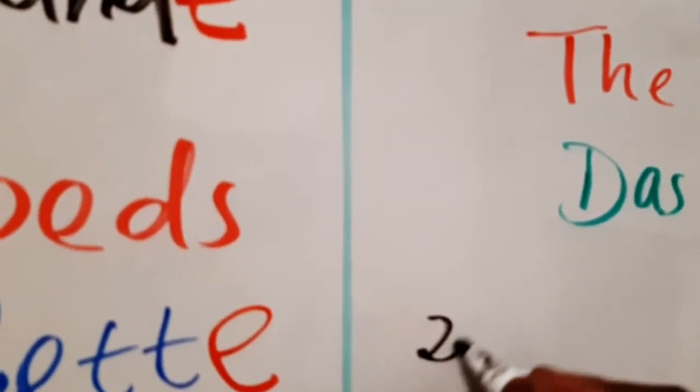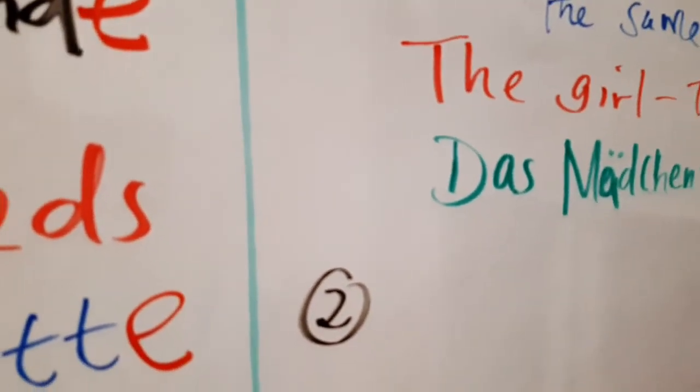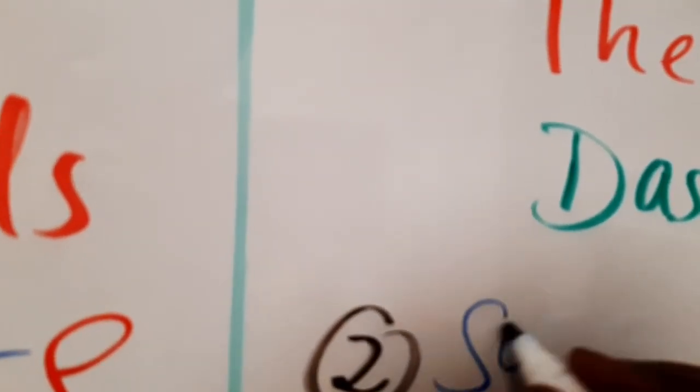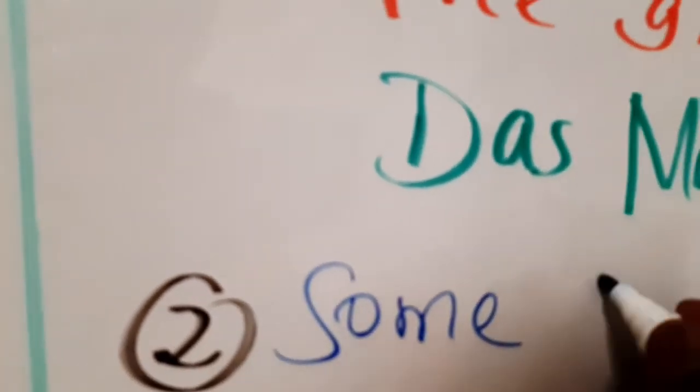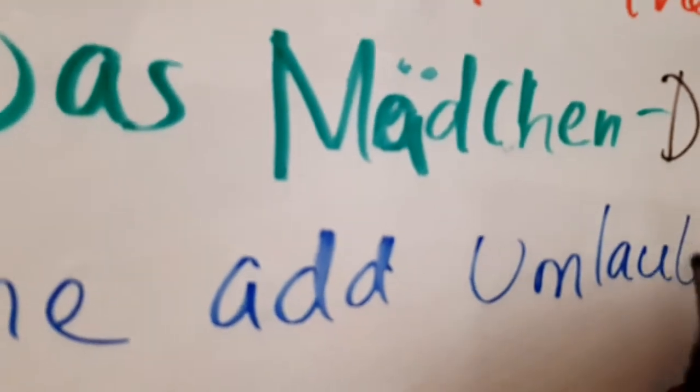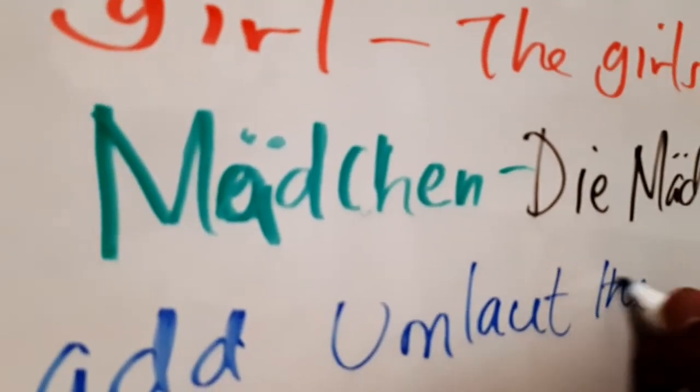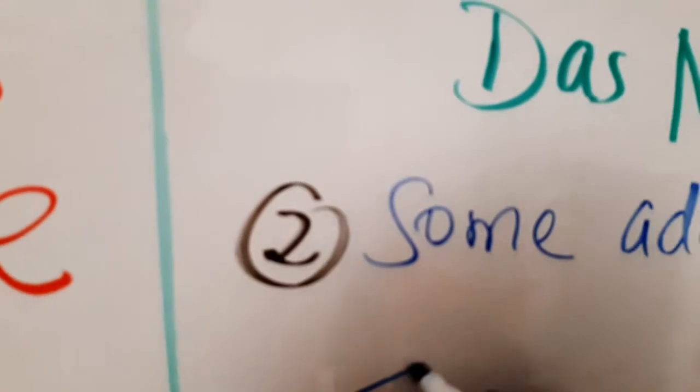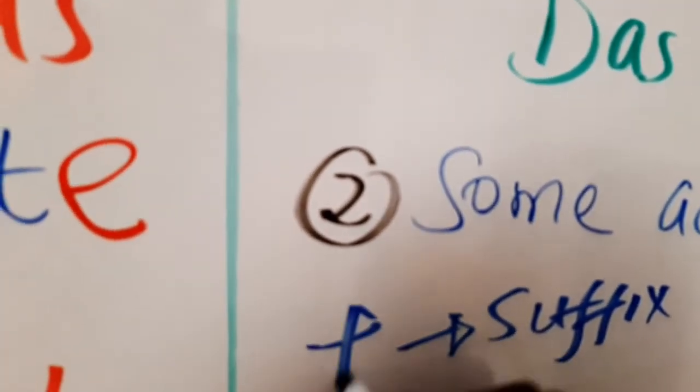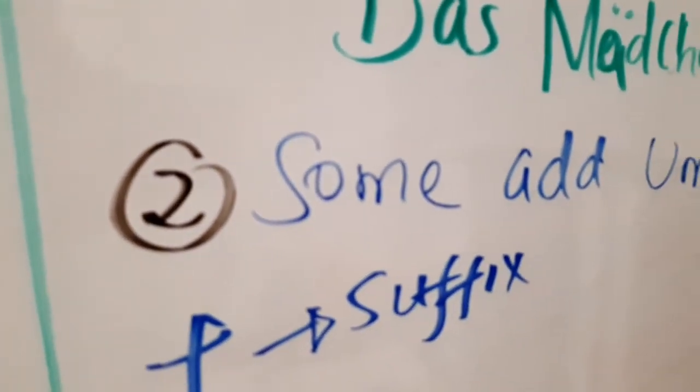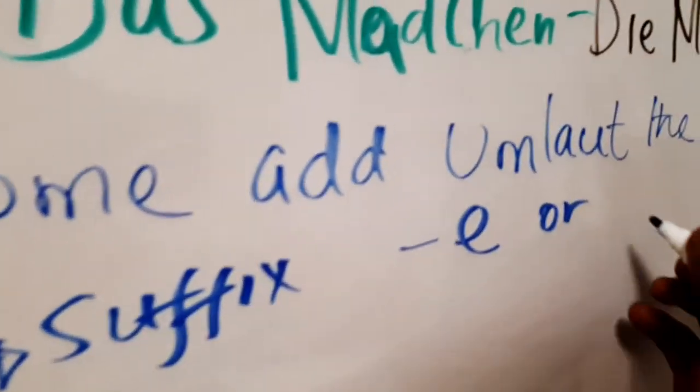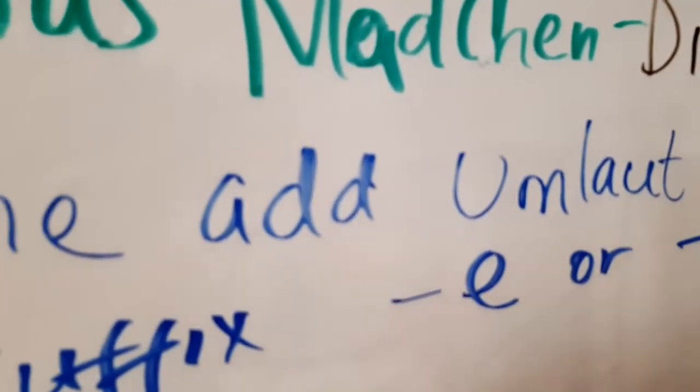All right, so that is one. Two is some nouns add umlaut to the vowel, then also add suffix -e or -er.